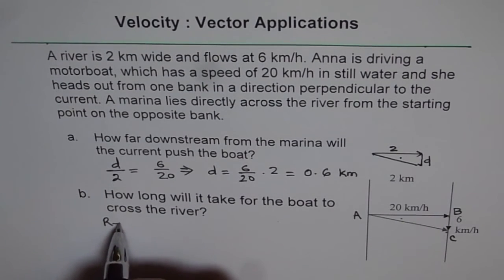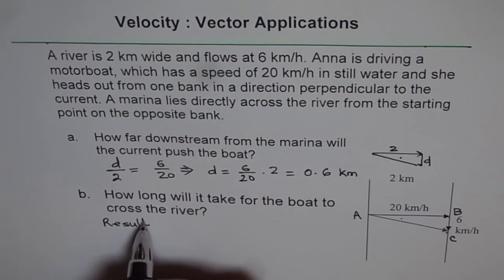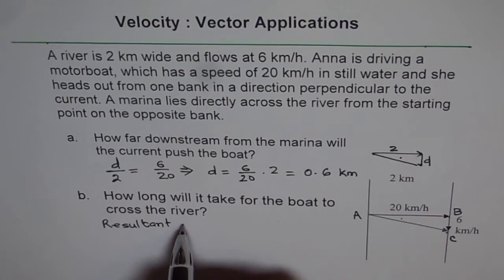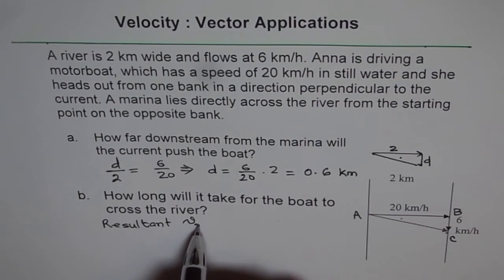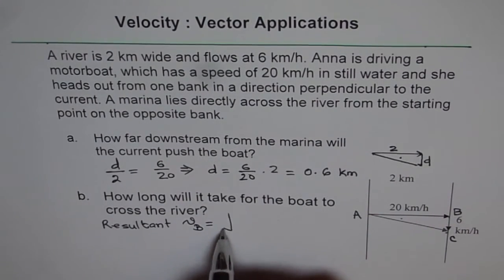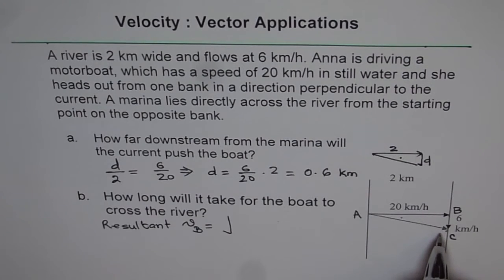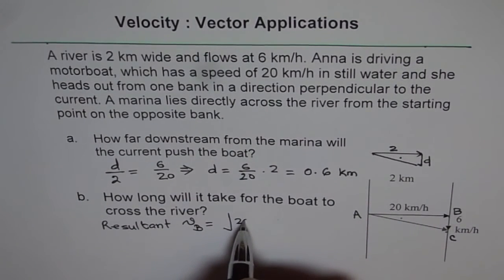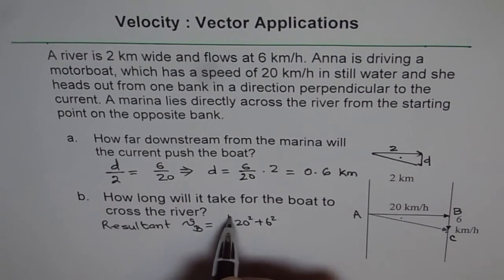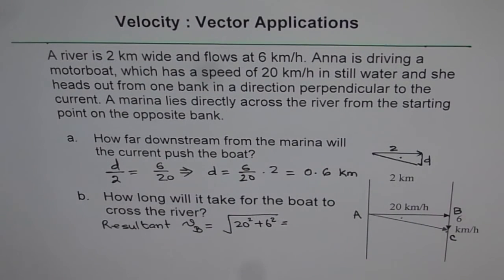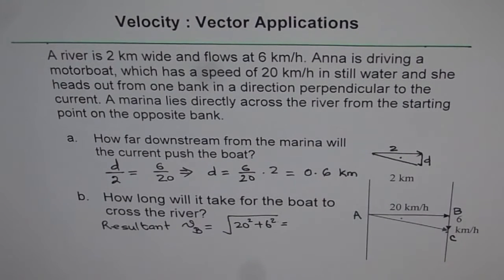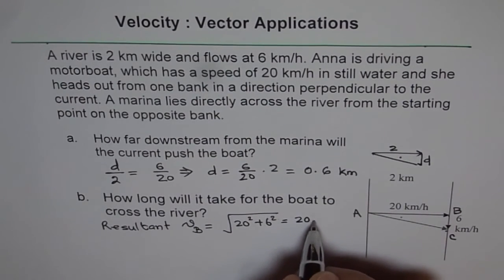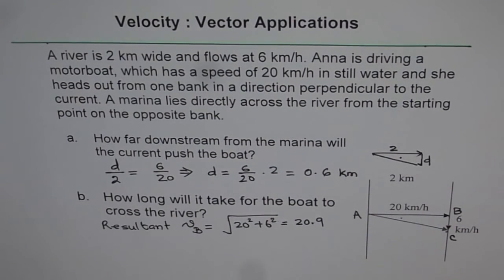So we say resultant speed of boat is, we can say velocity of boat is equal to, since this is a right triangle, we can write 20 square plus 6 square root. And that is equal to, let us use the calculator. So 20 square plus 6 square square root gives us 20.9. So that is 20.9 for us.